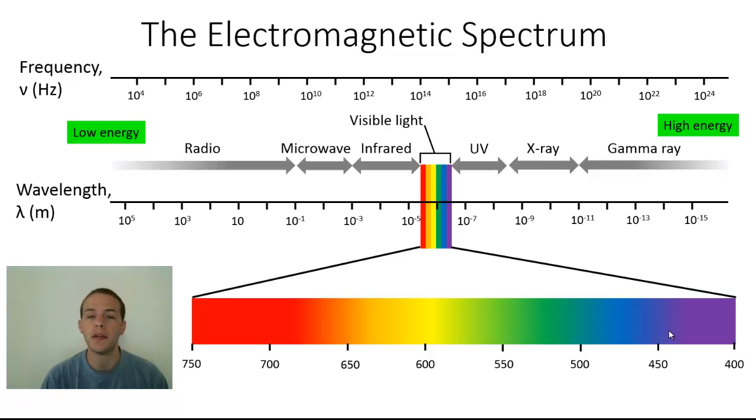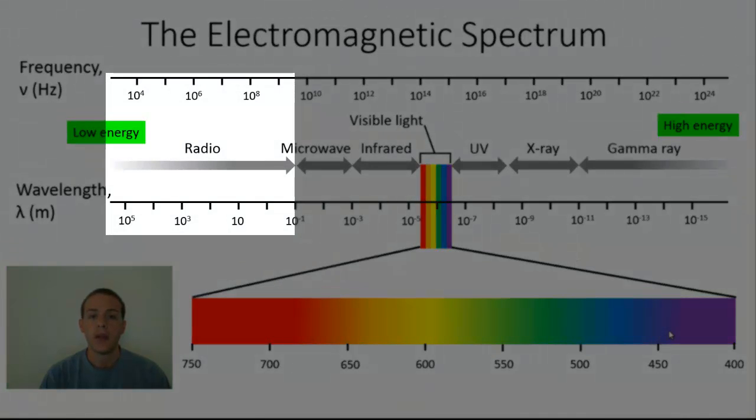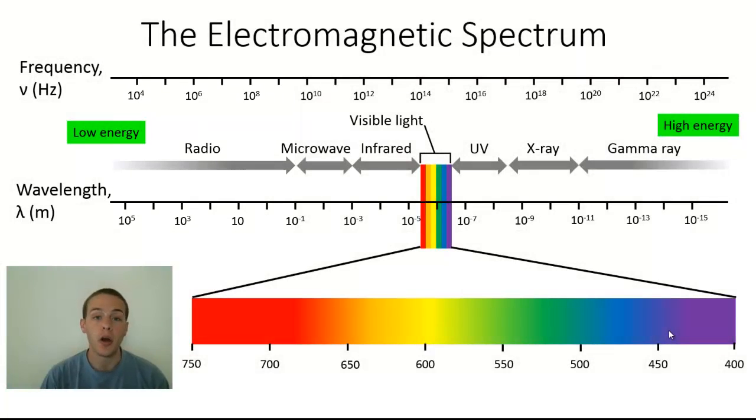Radio waves are the type of waves responsible for transmitting signals: AM radio, FM radio, the signals transmitted in your cell phone, TV, and other forms of communication.